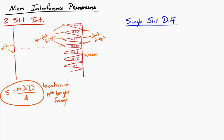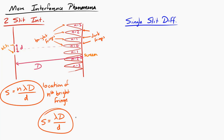Lambda is the wavelength, d is the distance between the slits and the screen, and small d is the distance between the two slits. Each fringe is a certain distance away from the next bright fringe, and that distance is given by S is equal to lambda d over d.